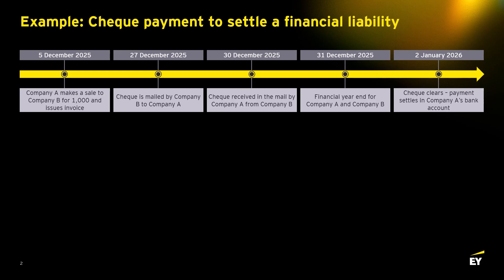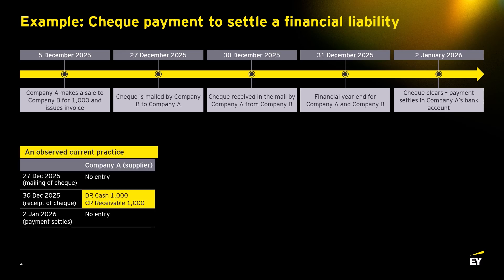This can best be illustrated with an example. Looking first at how the amendments apply to the de-recognition of financial assets: Company A, with a year end of 31st of December, sold an item to Company B for 1,000 on the 5th of December and invoiced the customer with payment due within 30 days. On the 30th of December they received a cheque from Company B to settle the invoice, which they presented to the bank on the same day. If Company A currently follows the approach of adjusting their cash balance for receipts initiated but not settled, on the 30th of December the receivable of 1,000 is de-recognized and the cash balance is increased by 1,000.